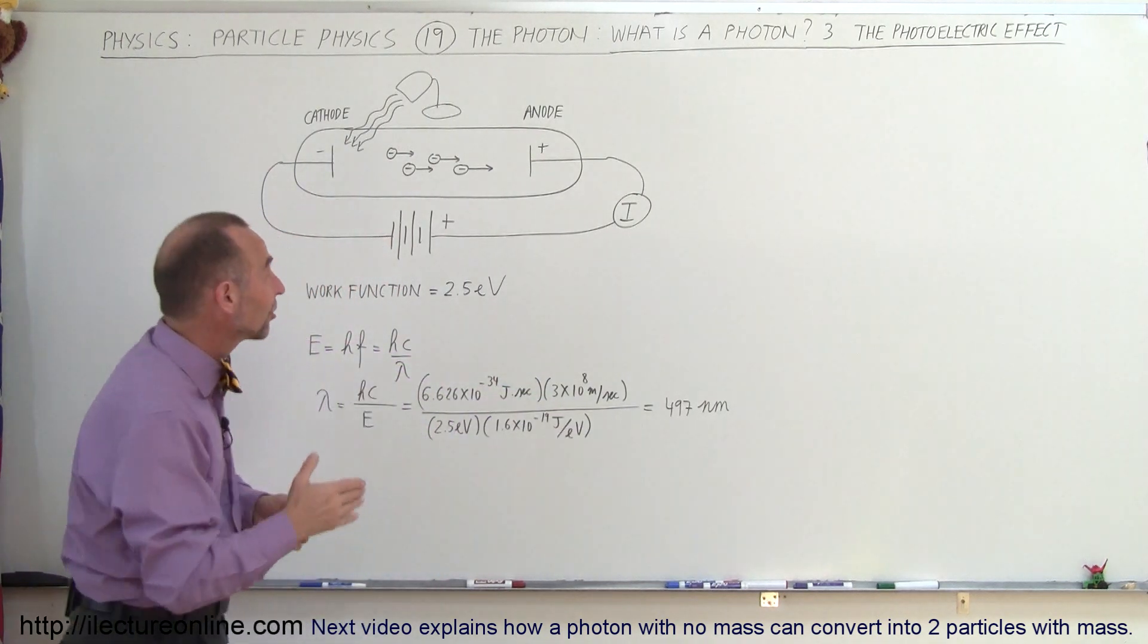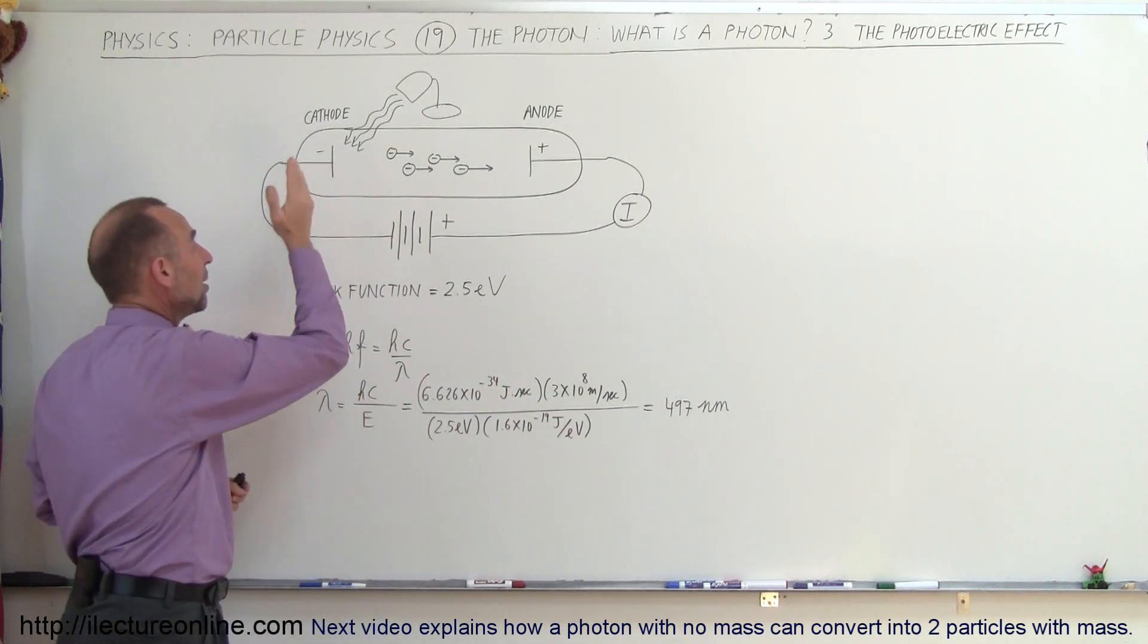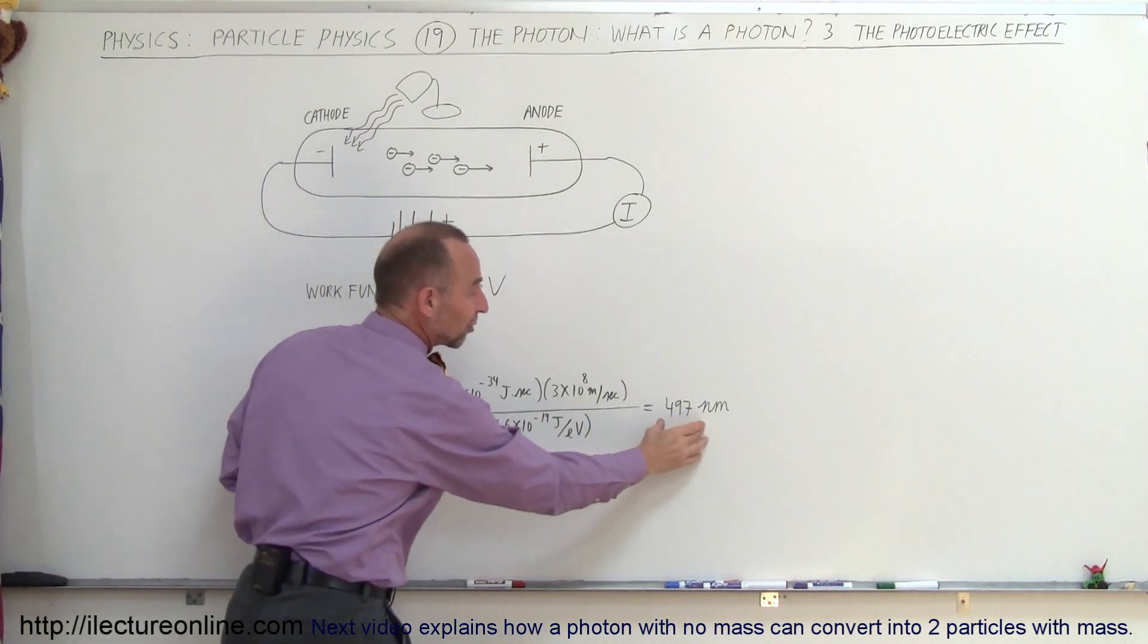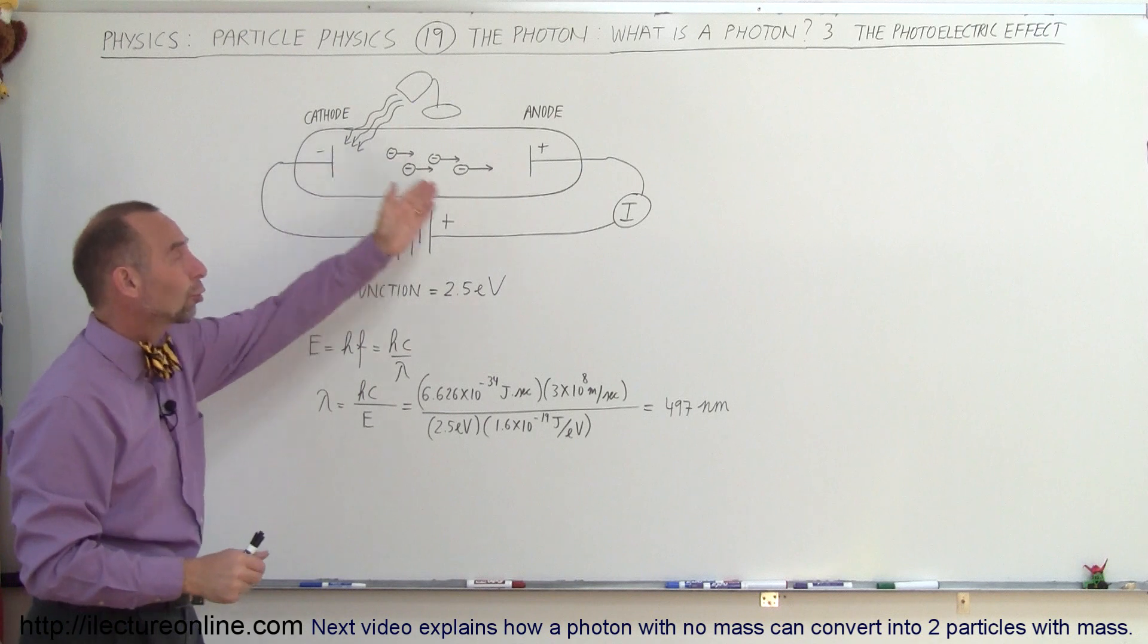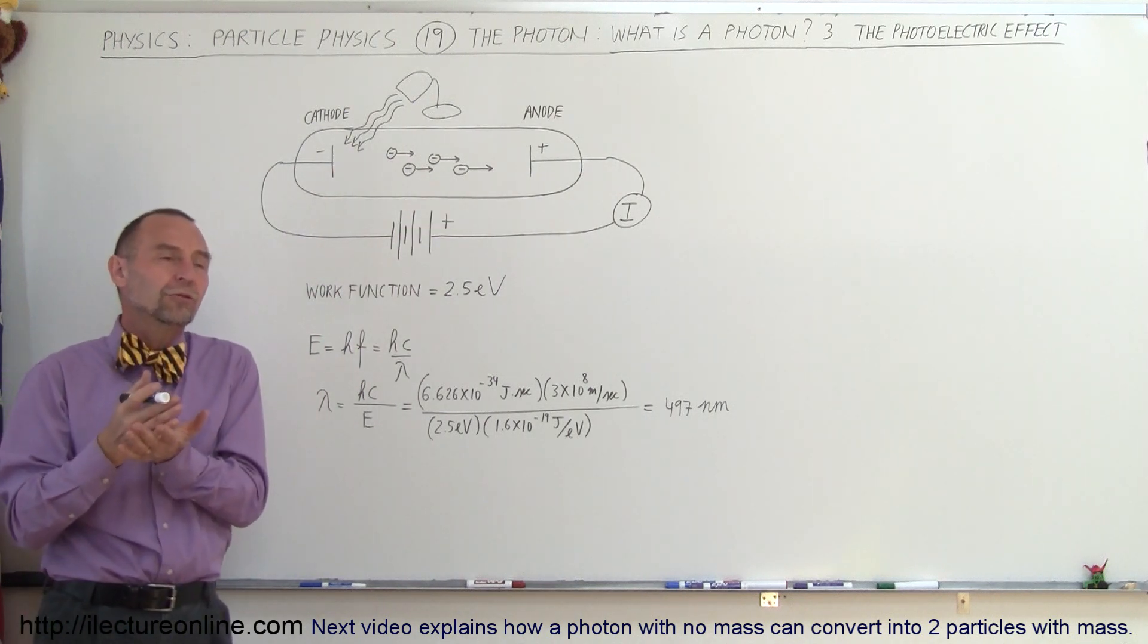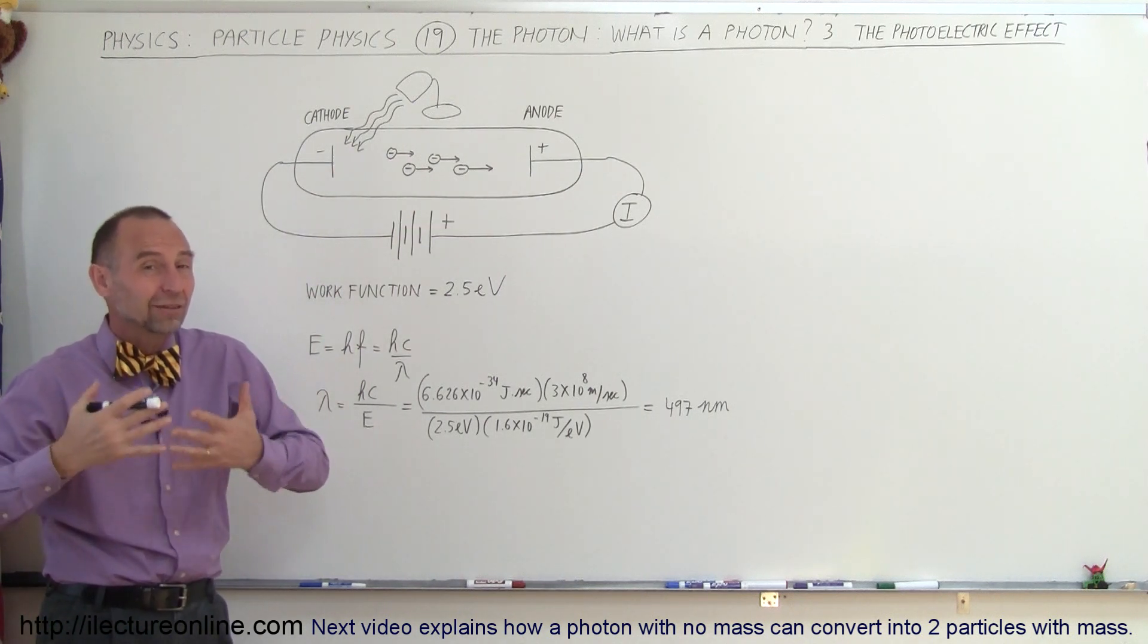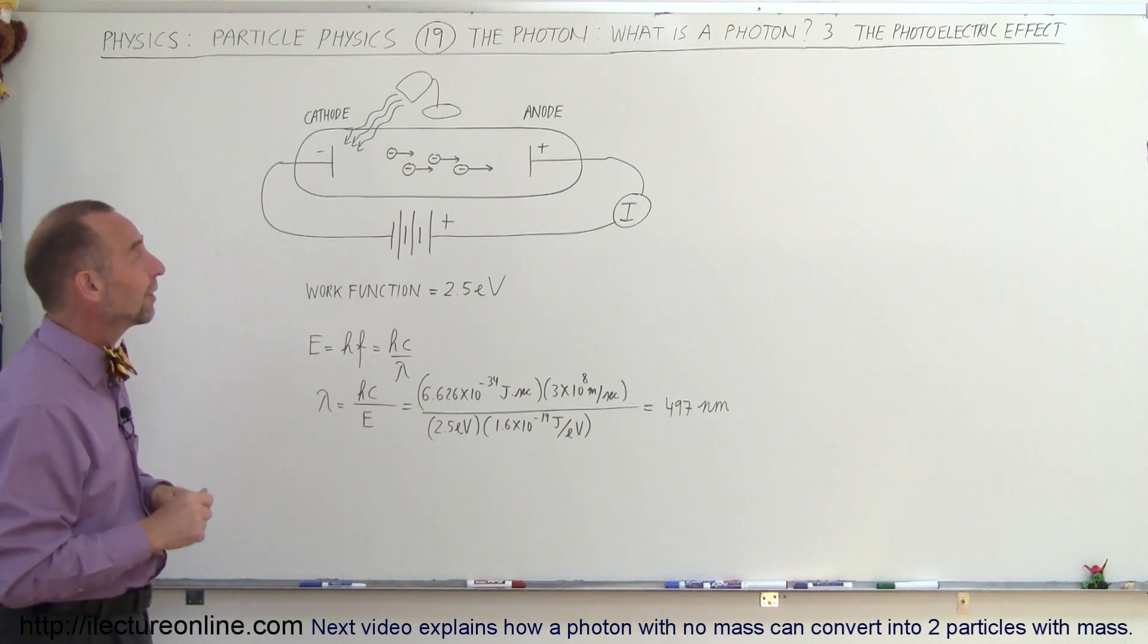Remember, higher energy photons can set electrons free, but anything below the energy required to set an electron free, the electron would not jump free and no current would flow. Now, from the classic point of view, when people didn't believe that photons were quantized chunks of energy, that light was simply a wave, electromagnetic wave,